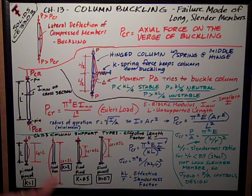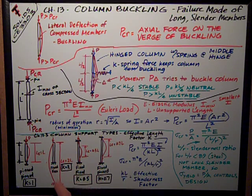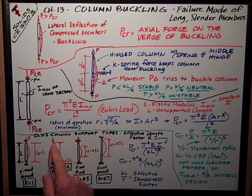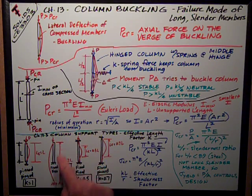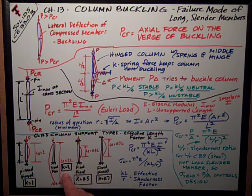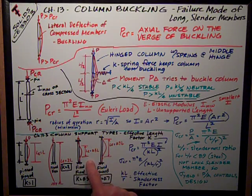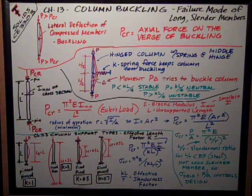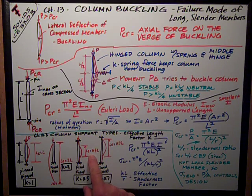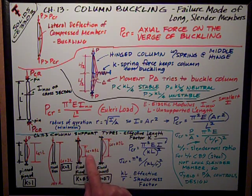If a column is fixed at the base and free at the top, it's really prone to sidesway and we can idealize its effective length as twice its actual length, so its K factor for fixed-free becomes 2. If it's fixed at both the top and bottom, the fixity provides stiffness and support, reducing its effective length. It buckles with a half-wave shape and its K factor is 0.5 for fixed-fixed, so its effective length is 0.5L.